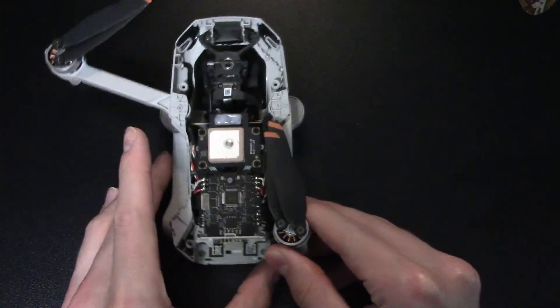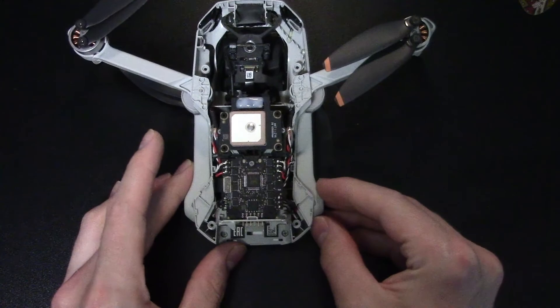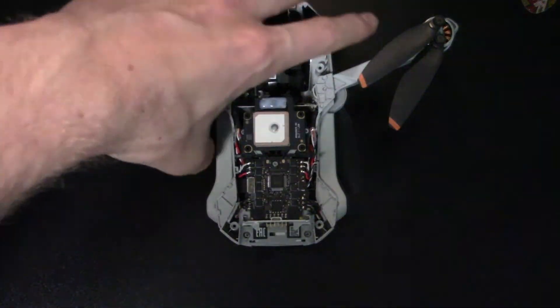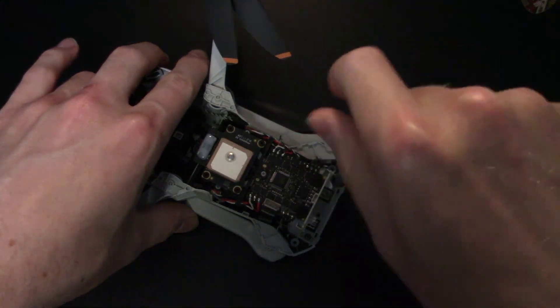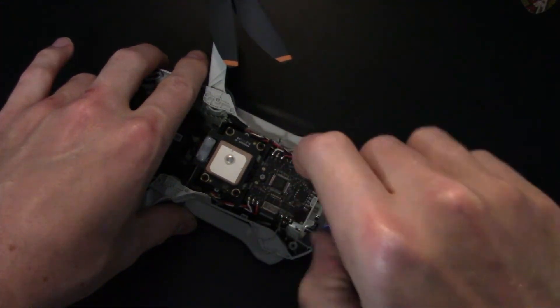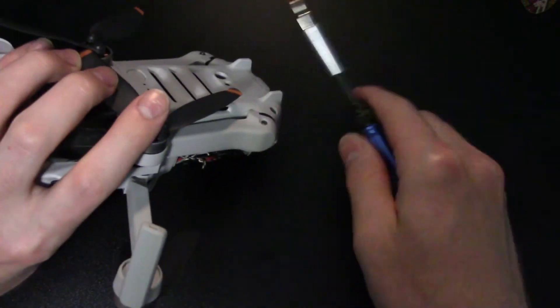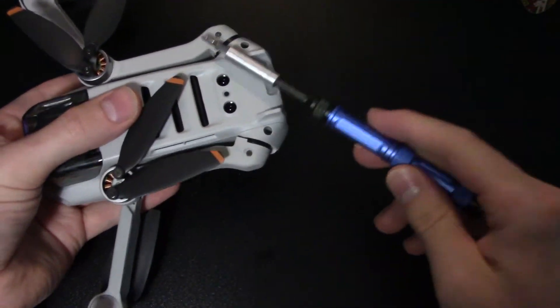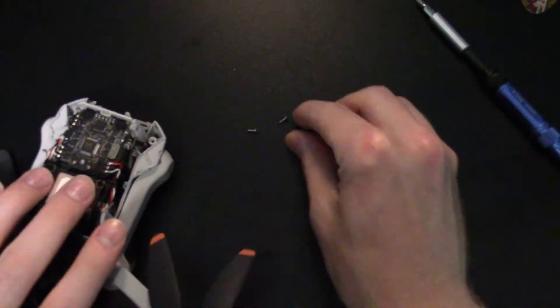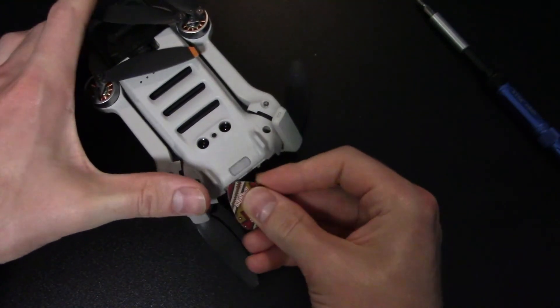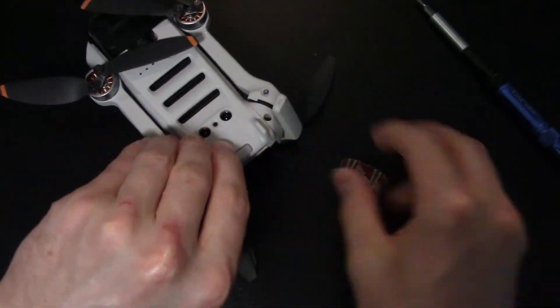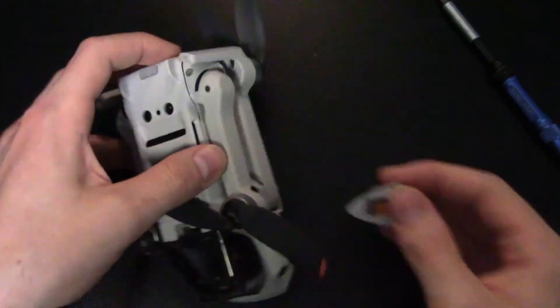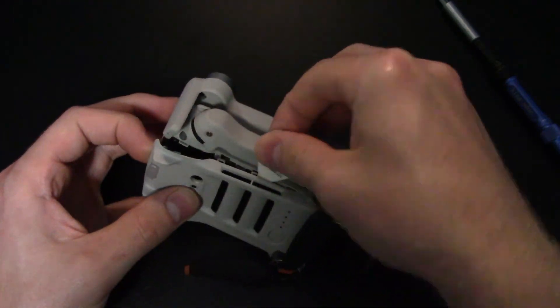With the top now off, you can access the two screws that hold the bottom plate on. Phillips screwdriver, Phillips screwdriver, and yeah. Then just take a guitar pick and pry it open at the back. This one's a lot more easy.